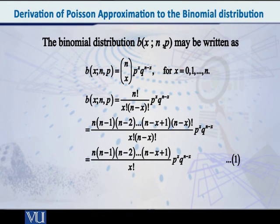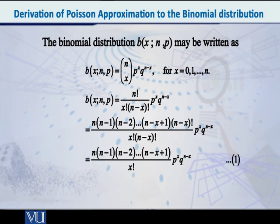Now, to prove this — in this particular situation, the binomial formula is converted to the formula of the Poisson distribution. The very first step will be to write down the PMF of the binomial distribution. So let's begin. Probability of x is equal to nCx · p raised to x · q raised to n minus x, where x equals 0, 1, 2 and so on up to n. Now, nCx is equal to n factorial over x factorial into n minus x factorial.